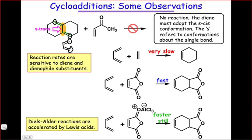The second set of observations is that the Diels-Alder reaction, in the absence of any polarizing substituents, is very slow. The very basic parent Diels-Alder reaction is very slow.